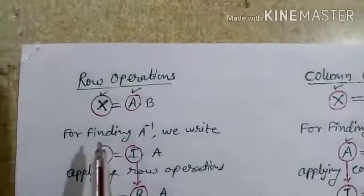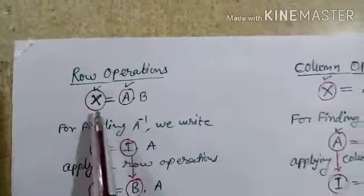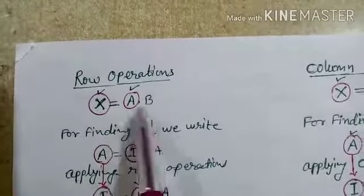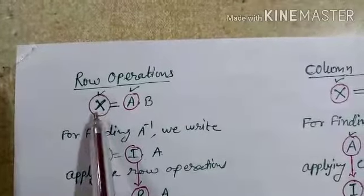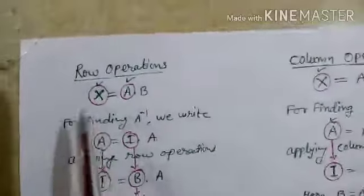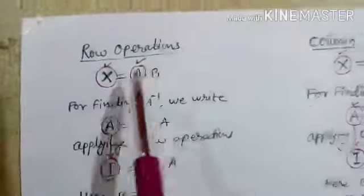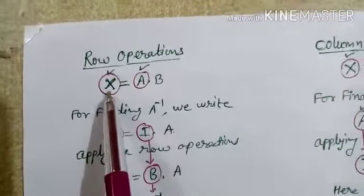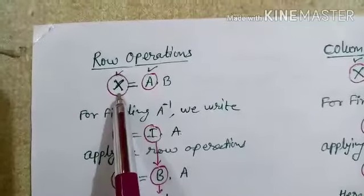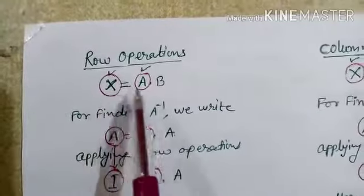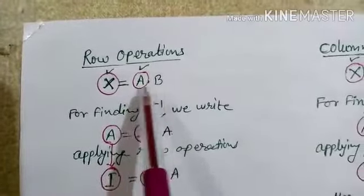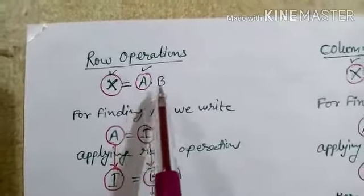Let me revise a few things. Suppose there is a matrix equation X equals A into B. On the left side there is a single matrix, but on the right side there are two matrices, A into B. If you want to apply row operations, all the row operations will be applied on the left side single matrix X, and simultaneously on the right side but only on the first matrix A, not on B.